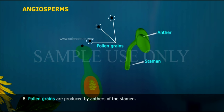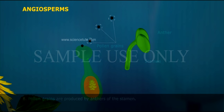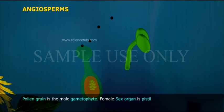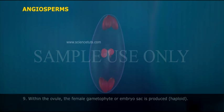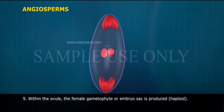Eighth, pollen grains are produced by anthers of the stamen; the pollen grain is the male gametophyte. The female sex organ is the pistil, which consists of an ovary with ovules. Within the ovule, the female gametophyte or embryo sac is produced.